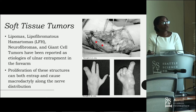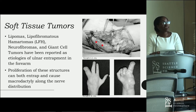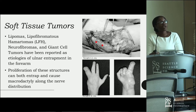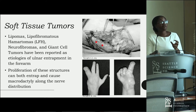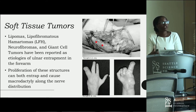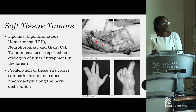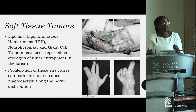Other soft tissue tumors include lipomas, lipofibromatosis, hematomas, neurofibromas, and giant cell tumors. The top picture shows a star indicating a dilated ulnar nerve due to proliferation of a lipofibromatosis hamartoma (LFH), and the bottom shows a congenital LFH that presented with macrodactyly due to rapid proliferation. Proliferation of these structures can entrap the nerve and cause macrodactyly, presenting two distinct classes of symptoms.